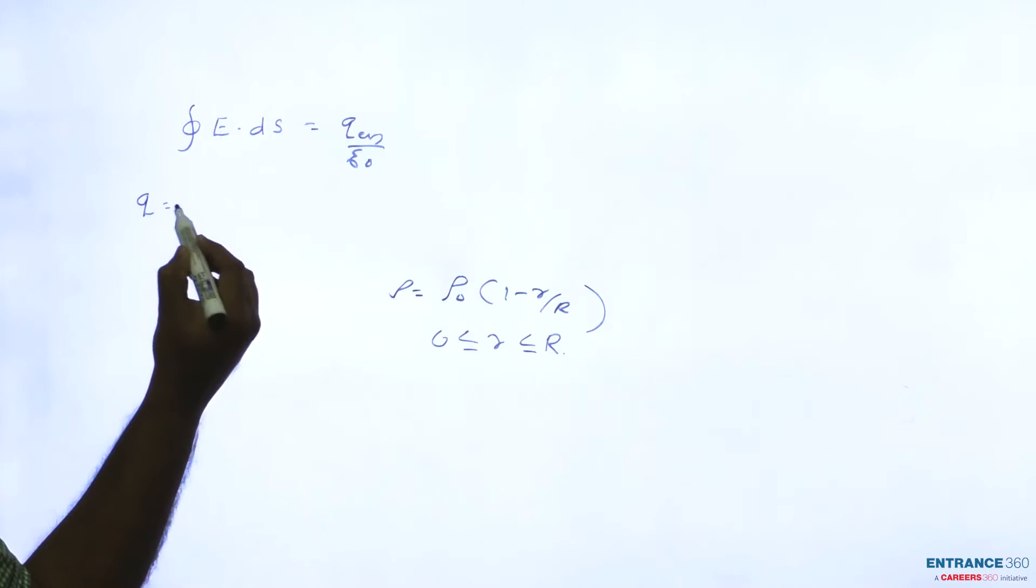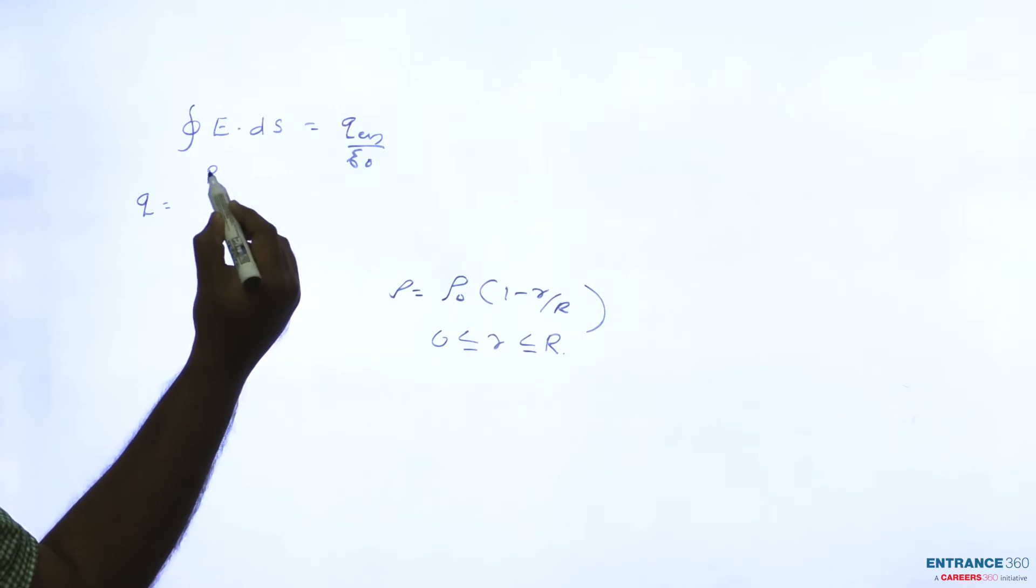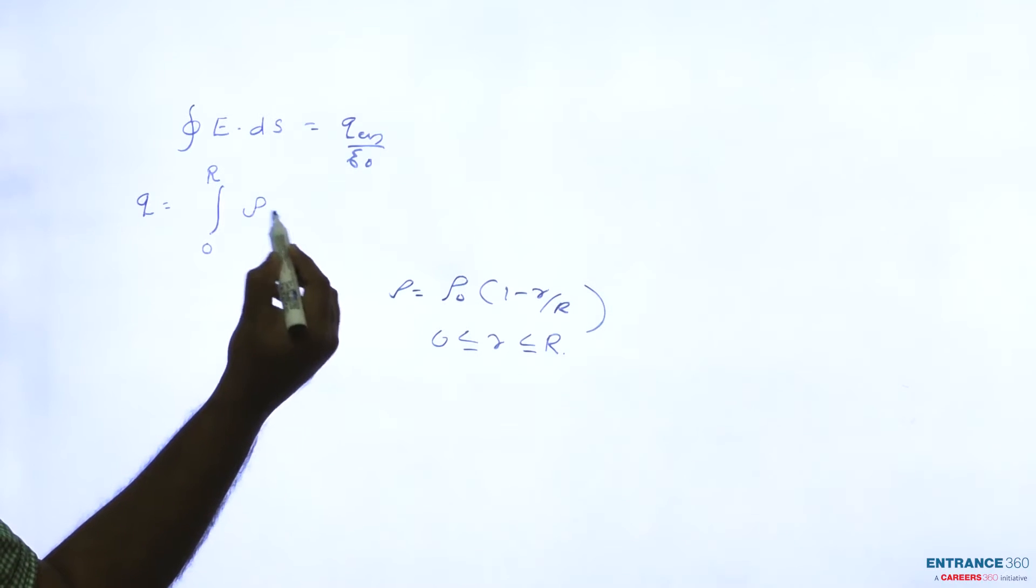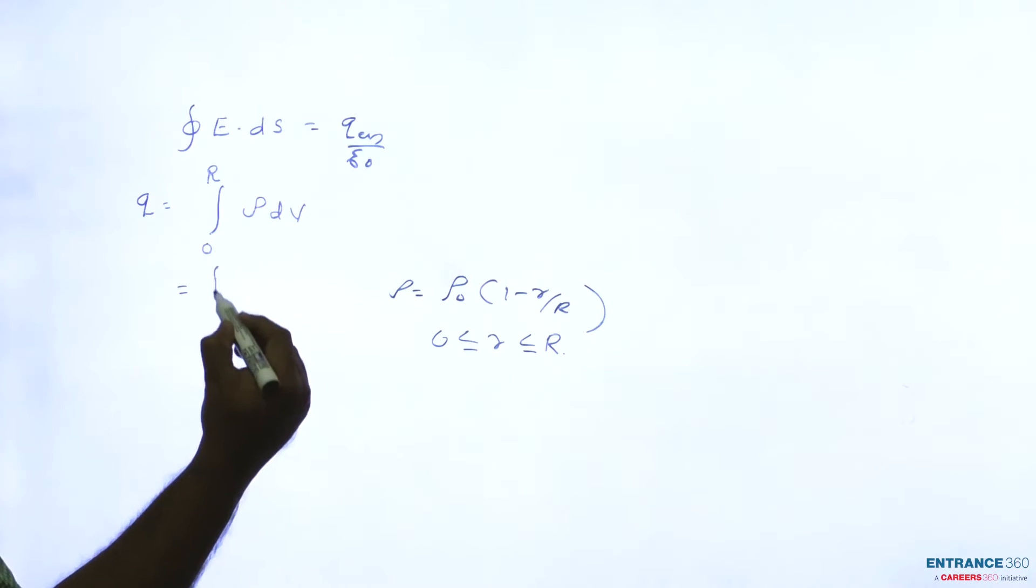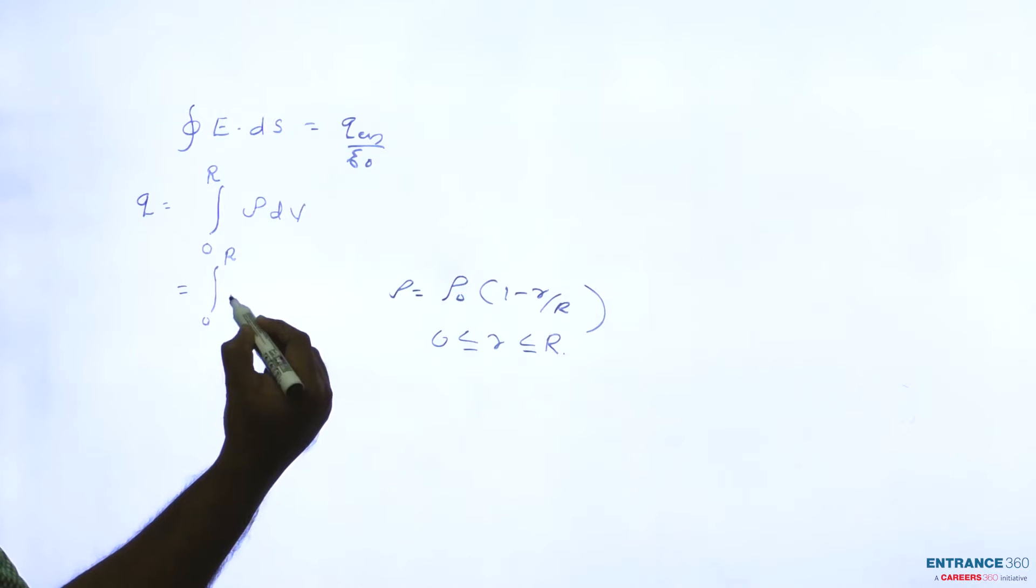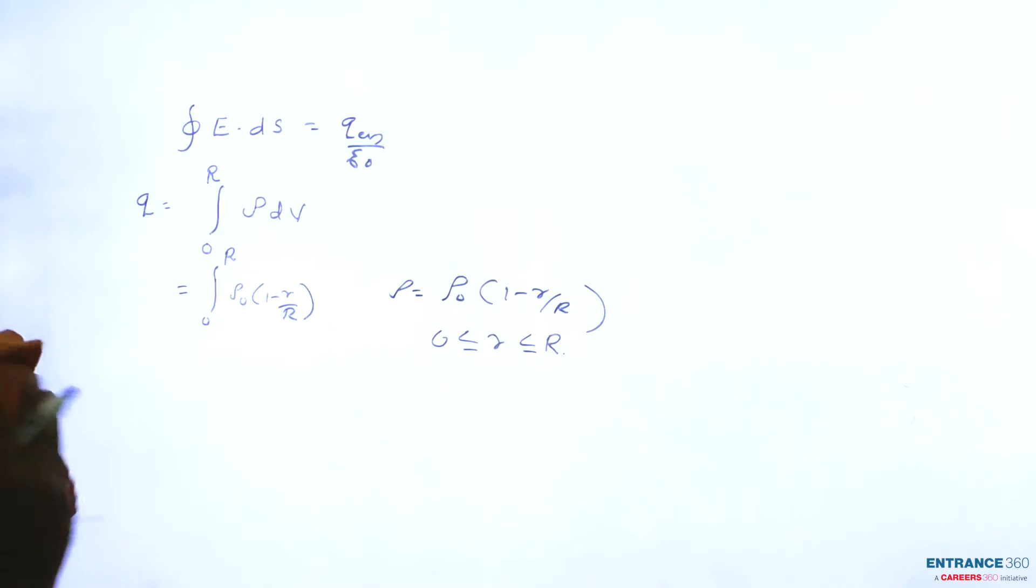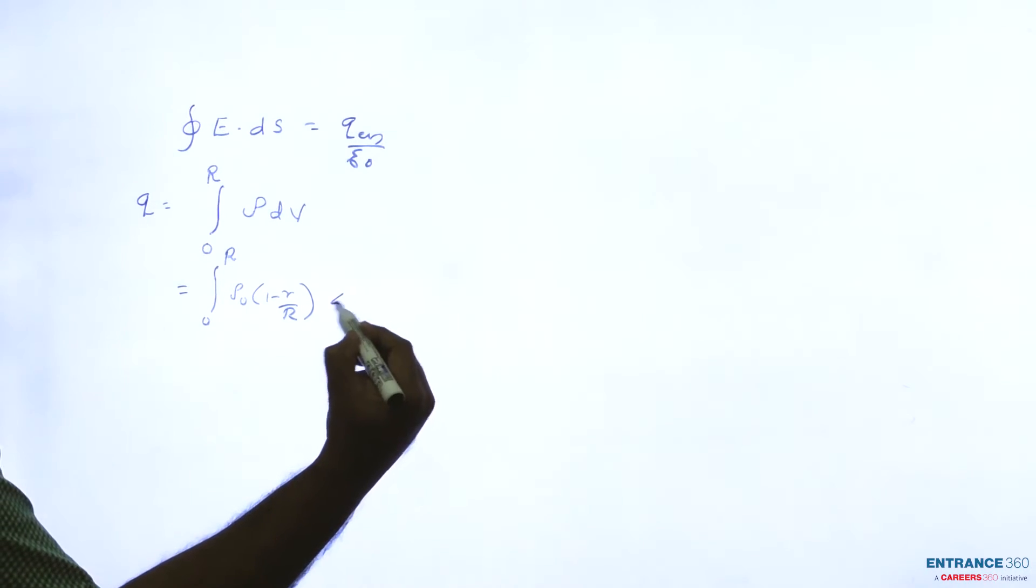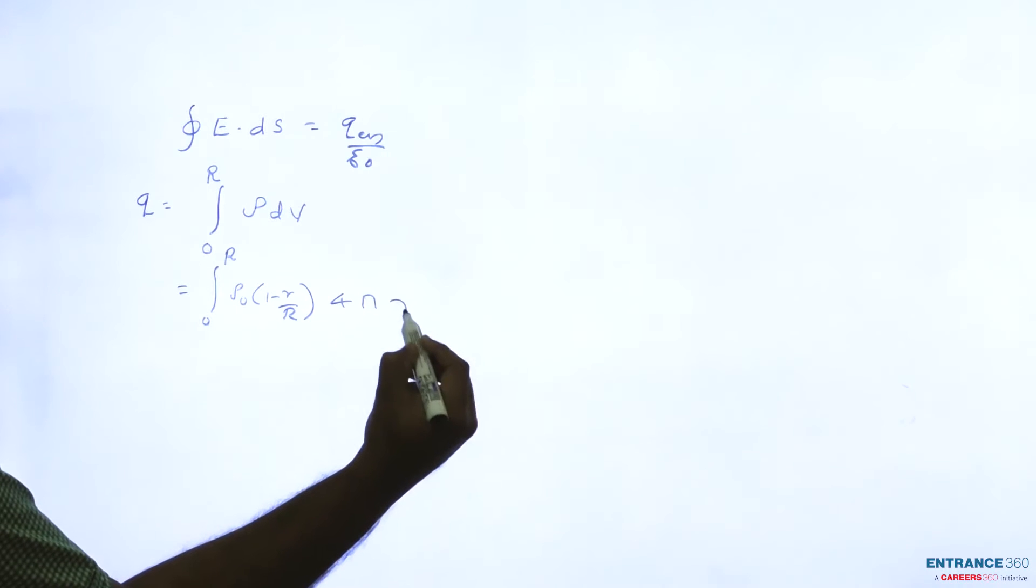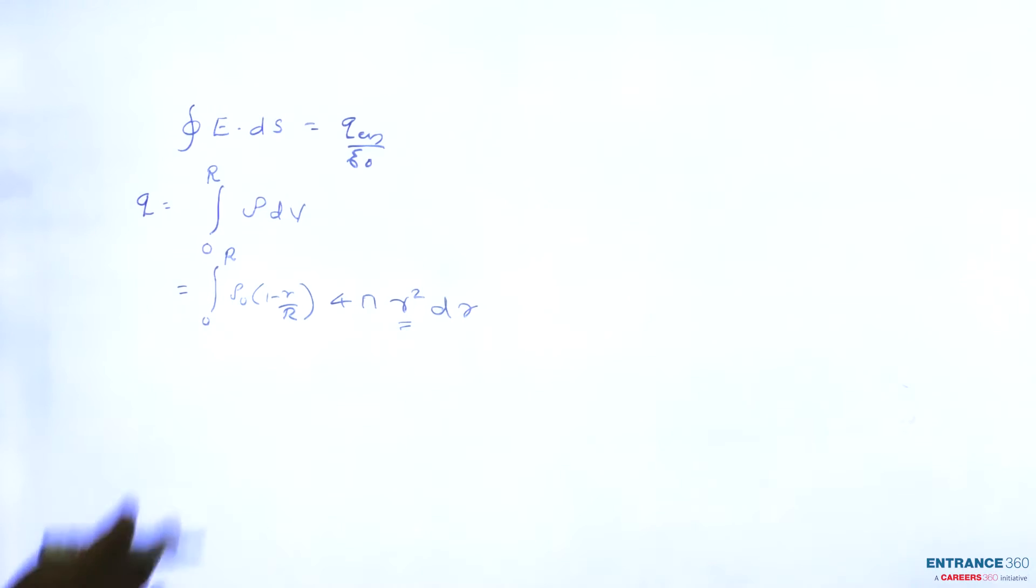Total charge will be integral for the total sphere of rho dV, where rho is the charge density. So we can write as integral from 0 to R of rho_0 (1 minus r by R) dV, which we can write as 4 pi r squared dr. This r is changing from 0 to R.